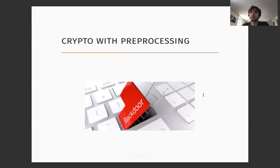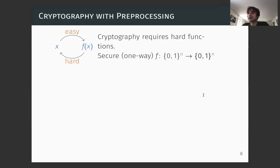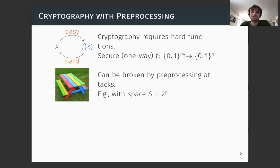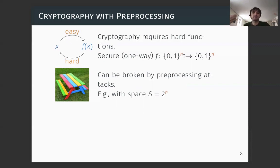Now let's talk about cryptography with preprocessing. For any interesting kind of cryptography, we need hard functions — one-way functions which are easy to compute but hard to invert. But if you come up with a function you think might be hard to invert, most likely someone will break it in a couple of months. So we rely on standardized functions. If your hard function was standardized in the 80s, modern computers with large amounts of space can probably break those functions — we can invert them using a lot of space and time in the preprocessing stage. There are many attacks like this, such as rainbow table attacks.